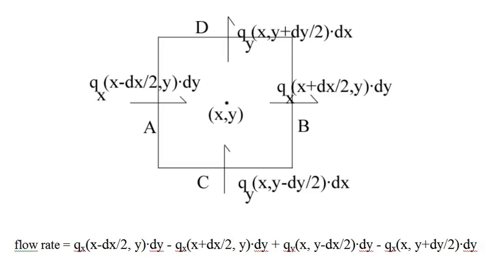If you guess that the 2D model is the partial derivative of temperature with respect to time equals K over C times the second partial derivative of temperature with respect to X plus the second partial derivative of temperature with respect to Y, you'd be right. We'll derive that in the next two slides. We want to compute the heat energy flow rate into a small rectangular control volume with sides of length dx and dy centered at x and y. The center of side A has coordinates x minus dx over 2 and y, and only the x component of heat flux passes through side A. So the heat flow rate through side A is the heat flux times the length of the side: Q_x evaluated at x minus dx over 2, y, times dy.